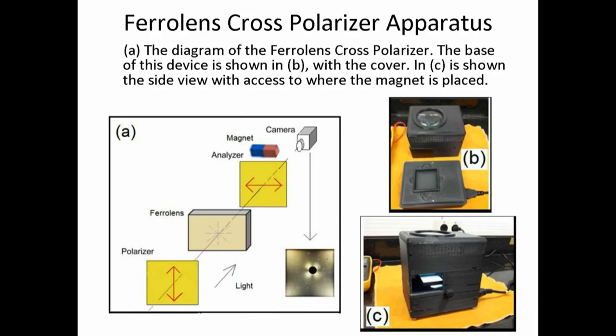In this slide, we have the ferrolens cross polarizer apparatus. This apparatus is designed for education, for high school or first year physics in college. We have two polarizing films and the ferrolens in the center with ferrofluid. On figure B, we can see the top of the device, and on C, where you place the magnets for the applied field.